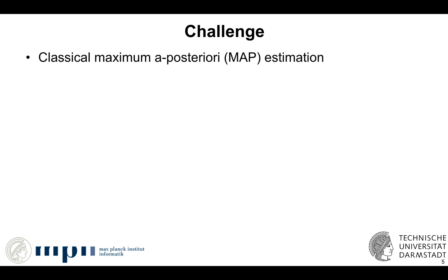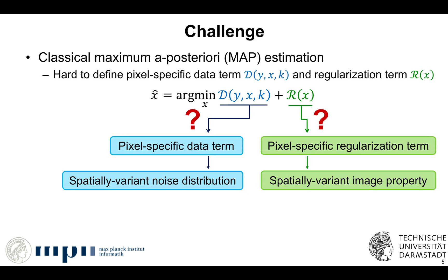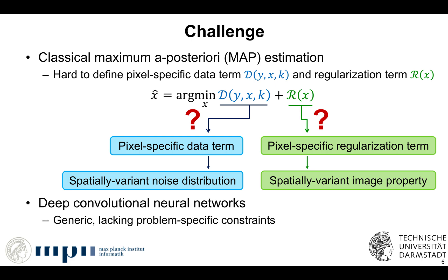Within the established MAP framework, it is hard to manually design pixel-specific data and regularization terms, making it challenging to model spatially relevant properties. Although standard deep neural networks build on expressive features, this alone lacks task-specific constraints and cannot effectively preserve fine-scale detail.